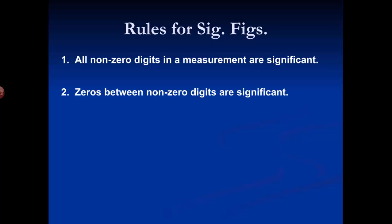Rule number two: if you have a zero that comes between non-zero digits — any number of zeros in between non-zero digits — those are significant as well. They're part of the measurement.